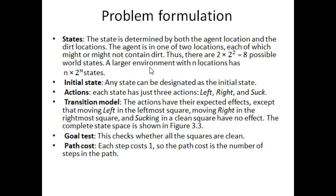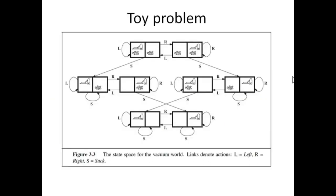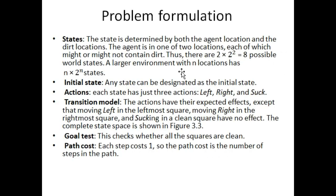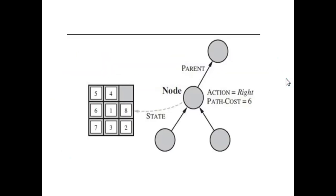In our formula, n represents the locations, and the value of n for this problem is 2. Why is n equal to 2? Initially there are two boxes, and these two boxes are two different locations — that is why n is 2. As a whole, these two boxes combined represent the state, but there are two locations, so n equals 2.